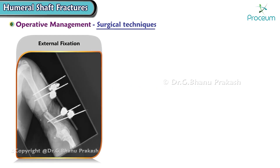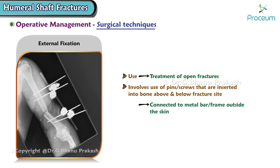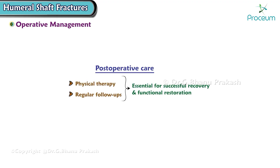External fixation is typically used in the treatment of open fractures. It involves the use of pins or screws inserted into the bone above and below the fracture site, connected to a metal bar or frame outside the skin, providing the necessary stability for the bone to heal. Post-operative care, including physical therapy and regular follow-ups, is essential for successful recovery and functional restoration.